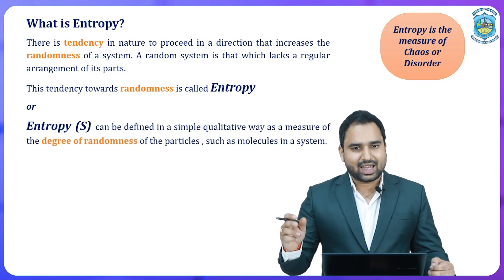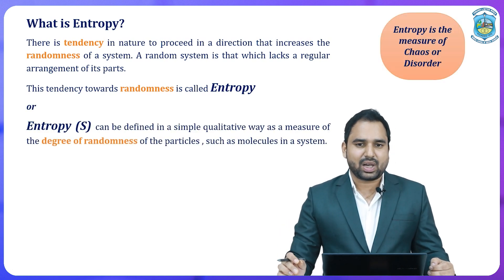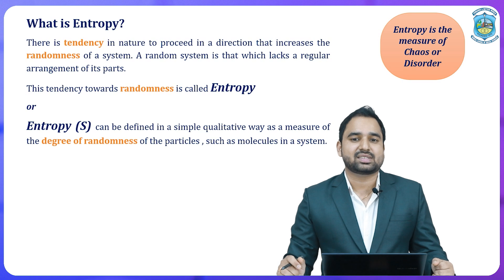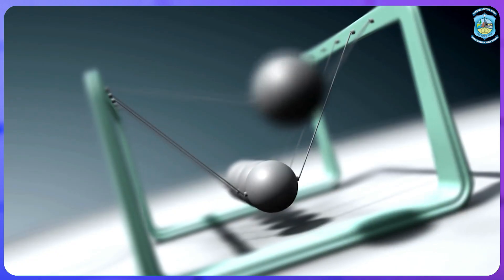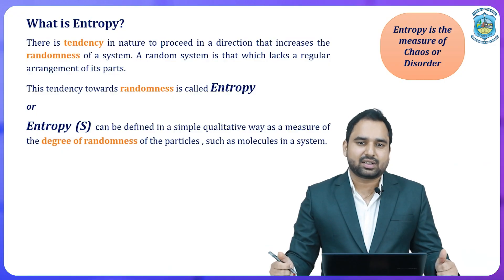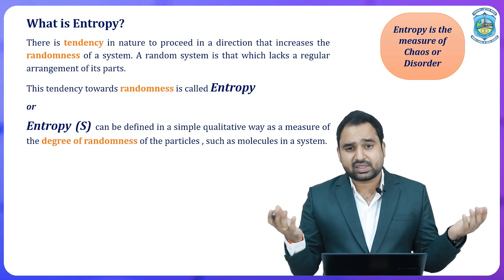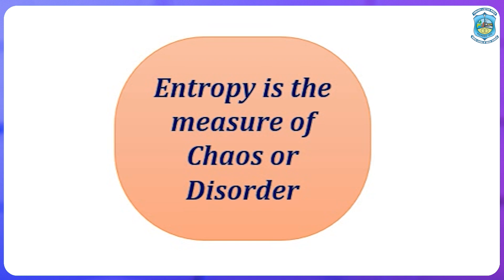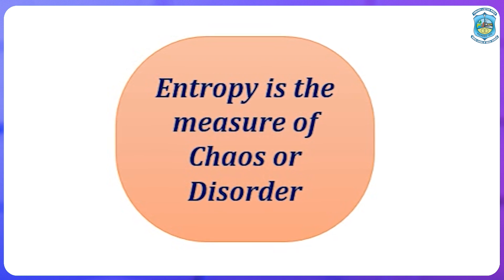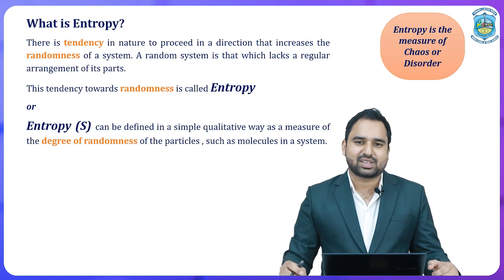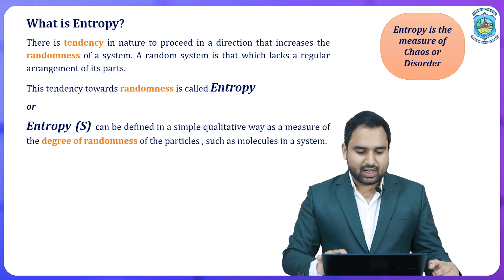Entropy can be defined in a simple qualitative way as a measure of the degree of randomness of the particles, such as molecules, inside a system. Everything is made up of small molecules; these molecules never stop — they continuously move, possessing kinetic energy. When factors like temperature and pressure increase the kinetic energy of these molecules, the disorder increases. So the one-liner definition of entropy is: entropy is a measure of chaos or disorder.